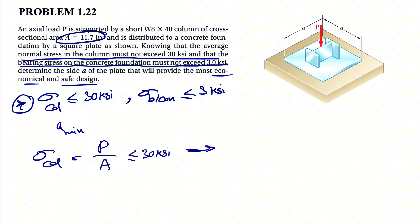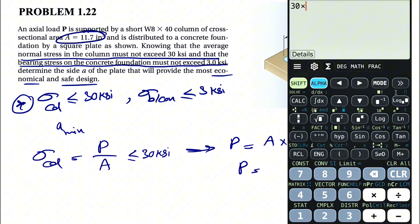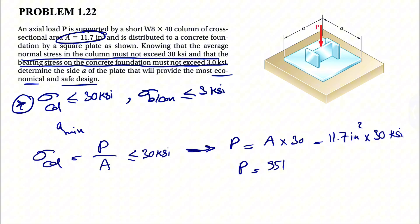So P equals A times 30 KSI, which is the maximum stress. We know A is 11.7 inches squared times 30 KSI, which gives us the force P in kips. 30 times 11.7 equals 351 kips, which is the maximum force that the beam can tolerate.